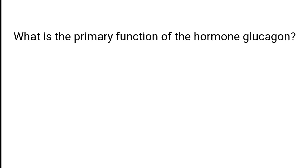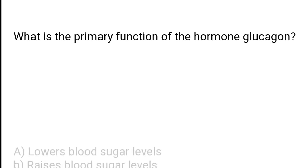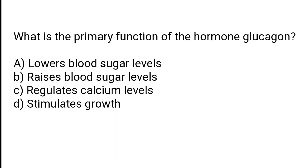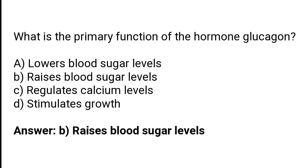What is the primary function of the hormone glucagon? Lower blood sugar levels, raise blood sugar levels, regulate calcium levels, stimulate growth. The correct answer is option B: the primary function of glucagon is to raise blood sugar levels.